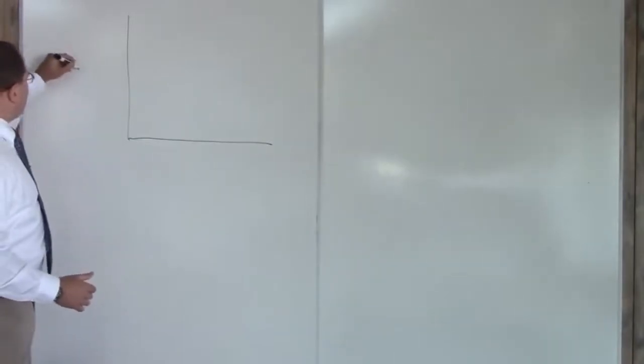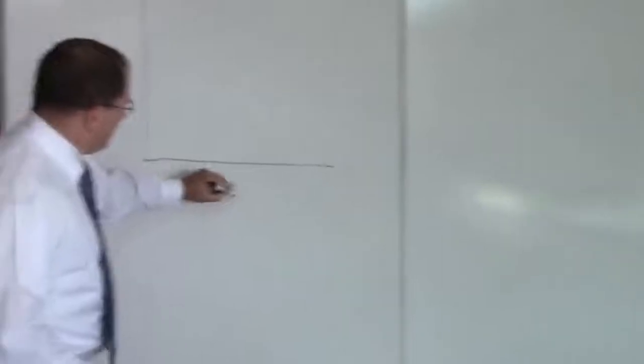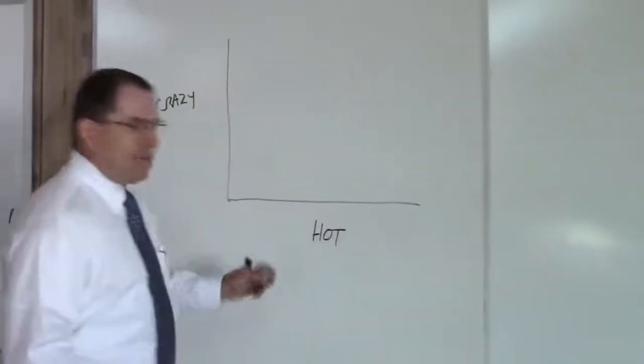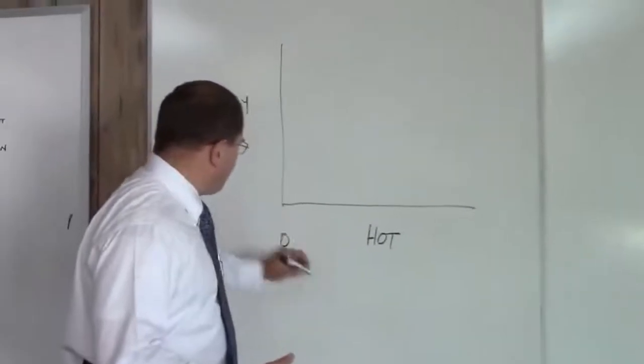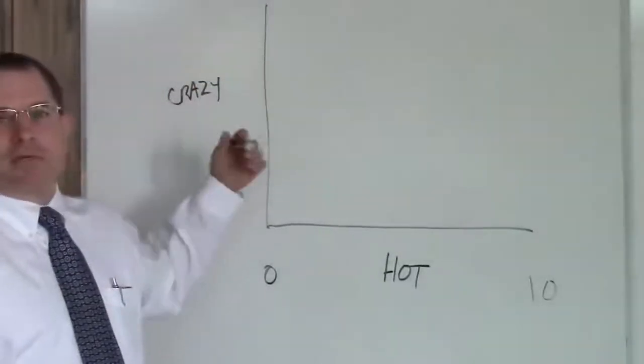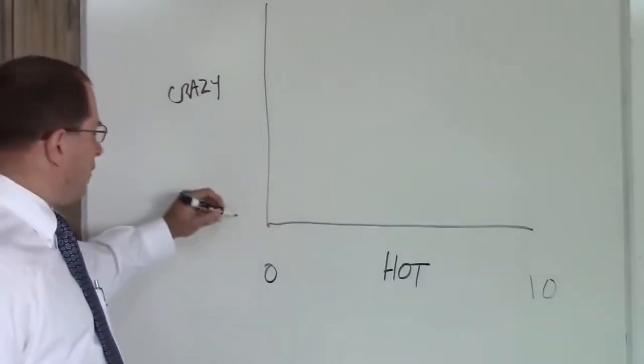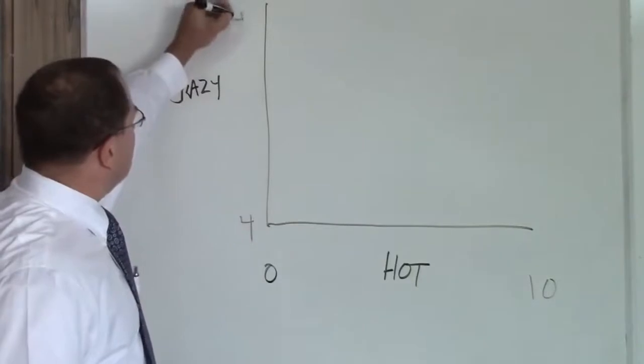You have your crazy axis and your hot axis. Hot is as usual measured from zero to ten. We're all familiar with that. Crazy is measured from four to ten because of course there's no such thing as a woman who's not at least a four crazy.